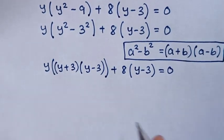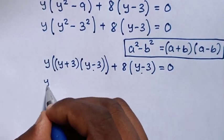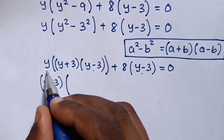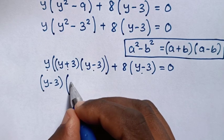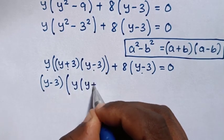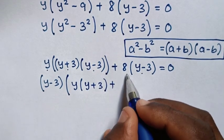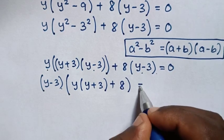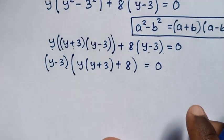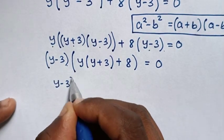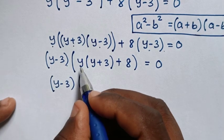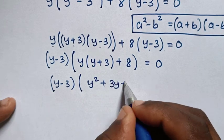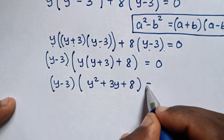Then our equation would be y bracket, then in this part it would be (y plus 3) times (y minus 3), bracket, then plus 8 bracket times this (y minus 3) bracket, is equal to 0. Then in the next step, y minus 3 is common, so we take (y minus 3) out of the bracket. Then this divided gives y times (y plus 3), then plus 8 bracket, is equal to 0. Our equation would be (y minus 3) bracket, y squared plus 3y plus 8 bracket, is equal to 0.